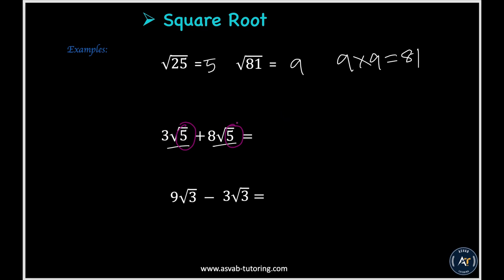So that will give you 3 plus 8 is 11 square root of 5. Something like that. So 3x plus 2x equal to 5x, right? So we did not change anything in the x. So that's the same way.